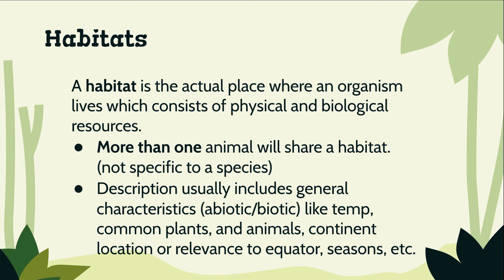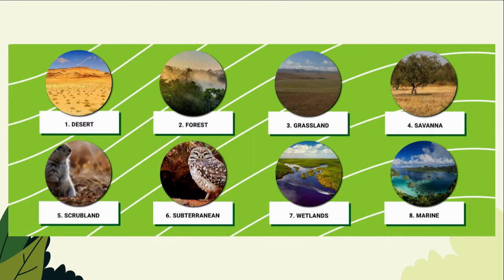In a habitat you're going to find multiple organisms living together, so habitats can be seen as communities where multiple populations of organisms live together. A habitat is also going to include both abiotic and biotic characteristics — abiotic characteristics like temperature and location relative to the equator, and biotic factors like the plants and animals that live in those areas.